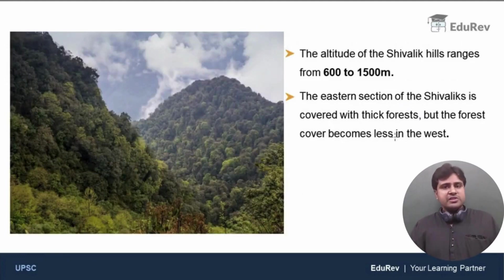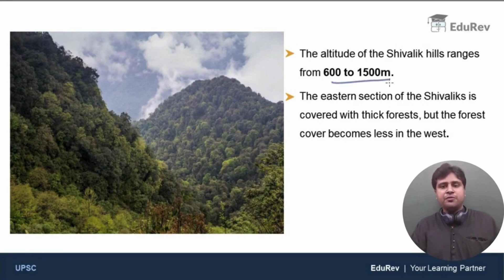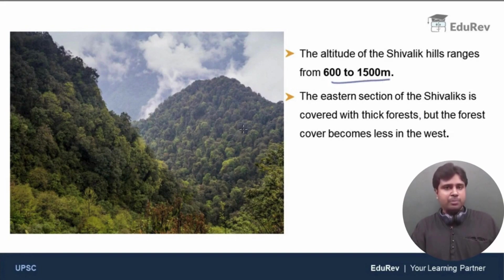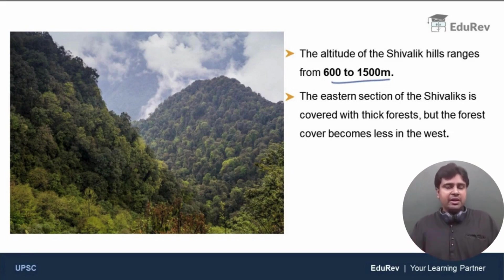The altitude of the Shivalik Hills ranges from 600 to 1,500 meters. These are hills, not mountains — there is a difference. When you say hill, the elevation is less. The Great Himalayas or Himadri, by contrast, are mountains whose elevation goes beyond 6,000 meters.